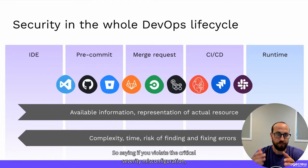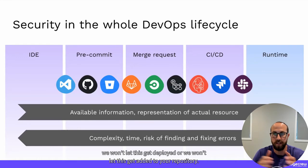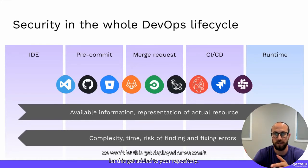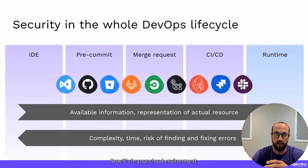If you violate critical severity misconfigurations, we won't let it get deployed or added to your repository. And then finally, in runtime, you can check again for misconfigurations — now it's in your cloud environment.